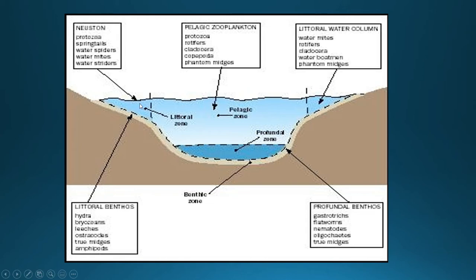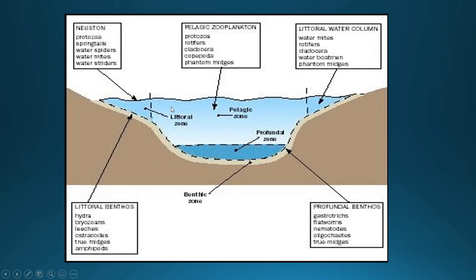The littoral zone is basically open water over shallow areas, where you don't have to go far down to reach the substrate, as opposed to the pelagic zone which is more open water overlying substrate found very deep. The littoral and pelagic zones are both open water areas. In ocean terms, we also have neuritic areas, which are very close to shore. Littoral benthos examples include hydra, bryozoans, leeches, ostracods, midges, and amphipods.